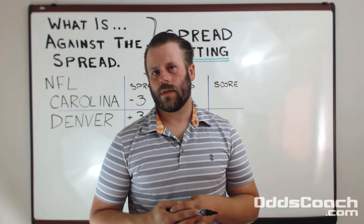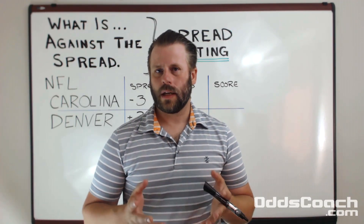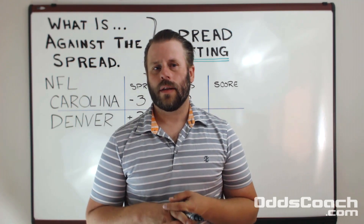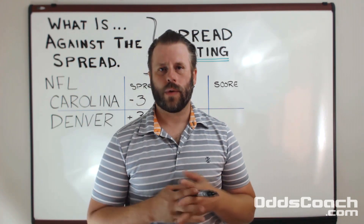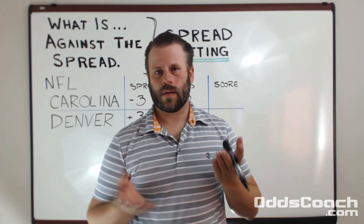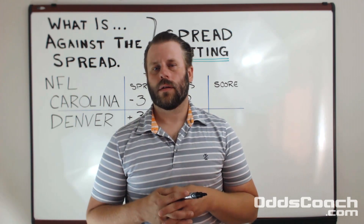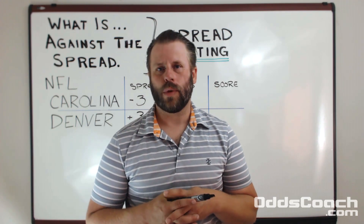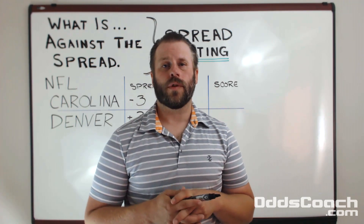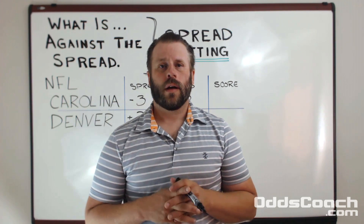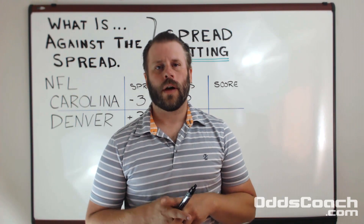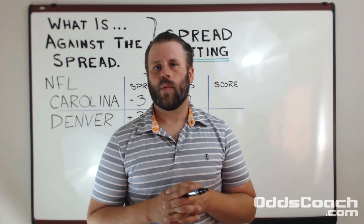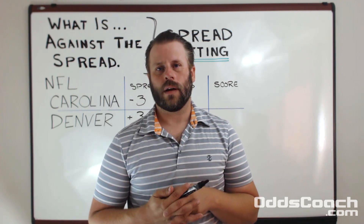Spread betting was invented around the 1920s to try to balance games where the skill level was quite different between the two teams. This made it more likely for people to place a wager on the weaker side and thus the sportsbook could balance their money out. So really it's like spotting points to the weaker team before the game begins, or taking away points from the stronger team depending on which side you're betting on. We typically see spread betting in NFL and NBA in high scoring types of games, but sometimes you can see some spreads in other sports.